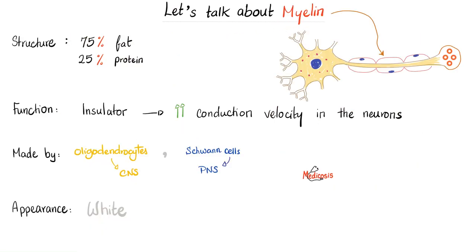Myelin is mostly fat — that's why it appears white — and 25% protein. Its function is as an insulator, interrupted at the nodes of Ranvier. The nerve impulse jumps between these nodes: where there is myelin insulation there is no electrical activity, but at the nodes there are electrical impulses — this is saltatory conduction and is how action potentials travel.